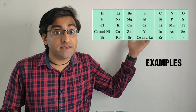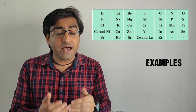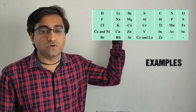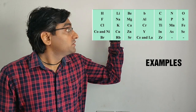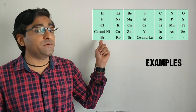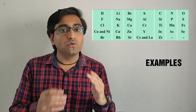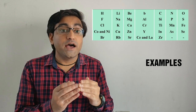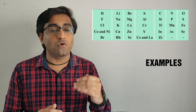Let us take some examples of Newland's Law of Octaves. Here you can see the table of Newland's Law of Octaves. In the first example, we will start with Lithium. Lithium being the first element, we will count eight elements — one, two, three, four, five, six, seven, eight. As we can see, the eighth element is Sodium. We all know Lithium and Sodium have similar properties as they are alkali metals, and hence this example is obeying the law.